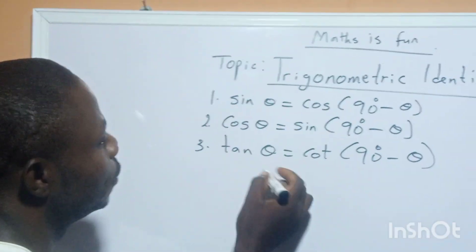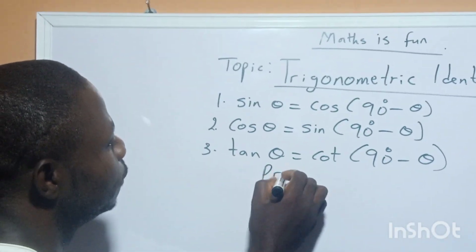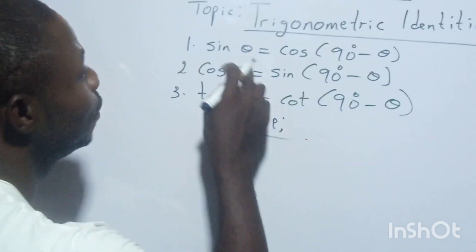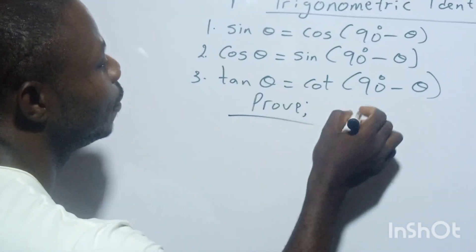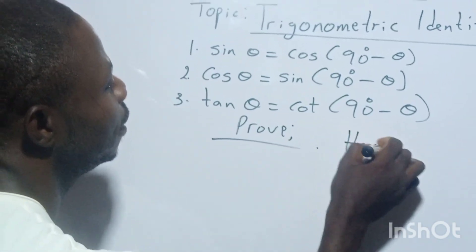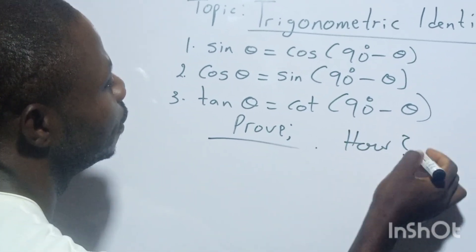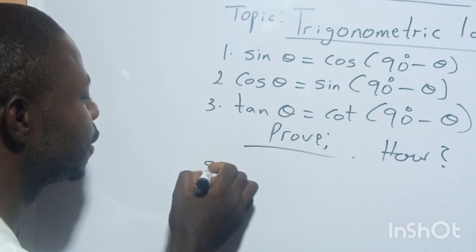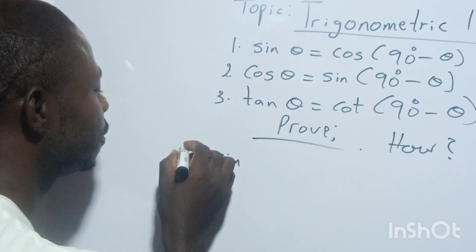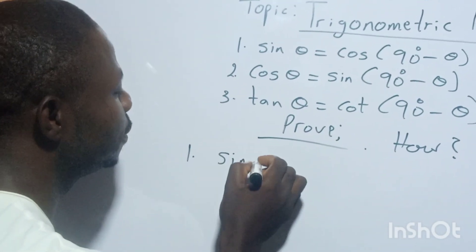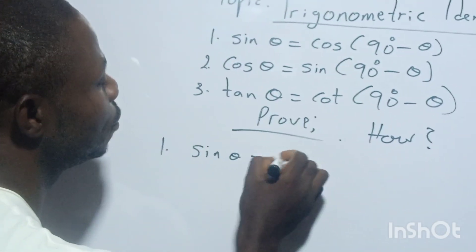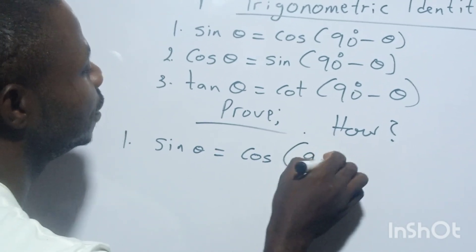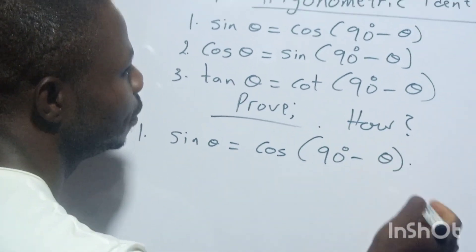Now let's check from the first one — let's prove how sin θ can become cos(90° − θ). The first identity: sin θ is equals to cos(90° − θ). Don't forget our chart.